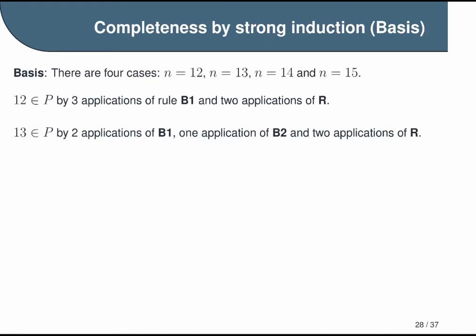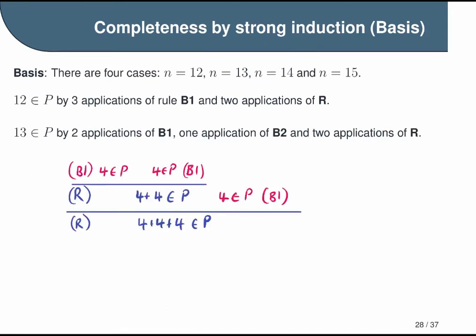Now moving on to 13. Fortunately, this case is very similar. We just replace one of our applications of rule B1 with an application of rule B2, which says 5 is in the set P. In total, we end up with two applications of rule B1, one application of rule B2, and two applications of rule R. Since this shows that 4 plus 4 plus 5 is in the set, we've shown that 13 is in the set.